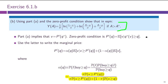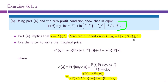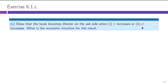This derivation was long but involved nothing beyond algebra. The basic steps are the same as throughout the course: take the informed trader's strategy, apply the zero-profit condition, combine them with some technical steps, and obtain the price impact equation — in this case, the limit order book supply curve Y(A).